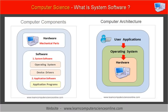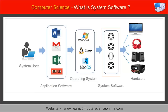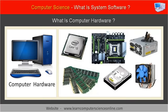The system software is internally used by the computer system itself to communicate with the various hardware components. In other words, the application software works as an interface between the user and the computer system, while the system software works as an interface between the operating system and the computer hardware. Hardware components can either be internal components that are part of the system itself, or connected externally — for example, keyboard, display monitor, and mouse.